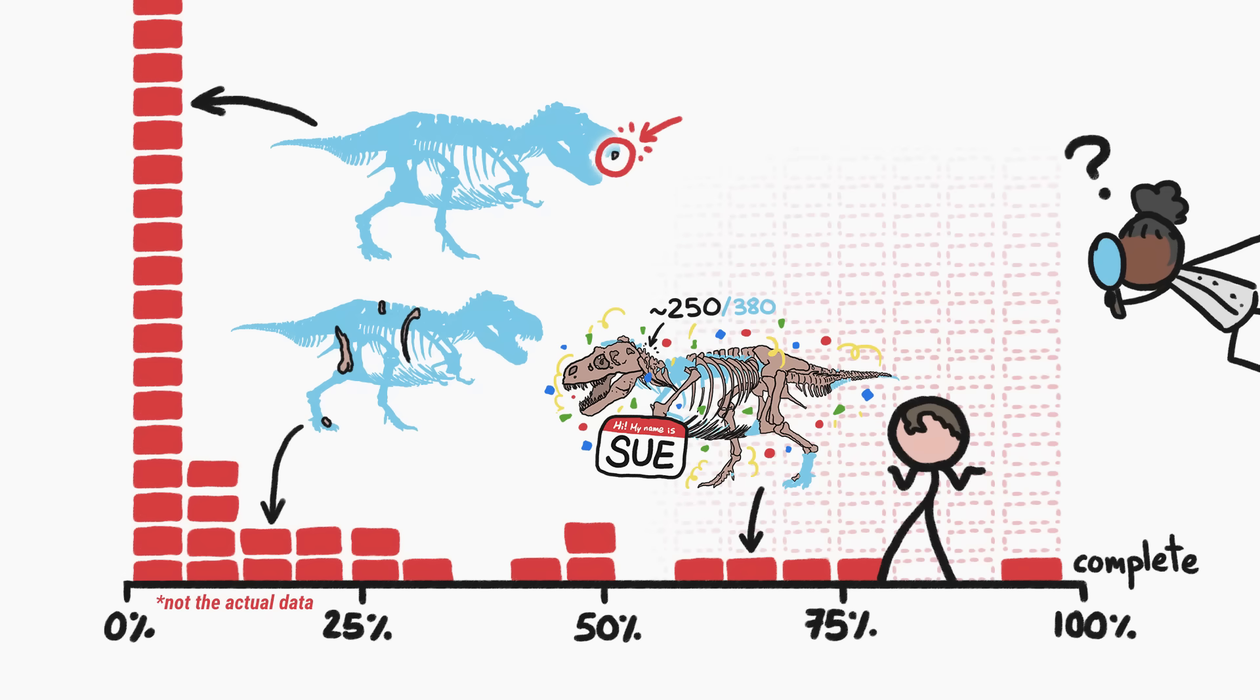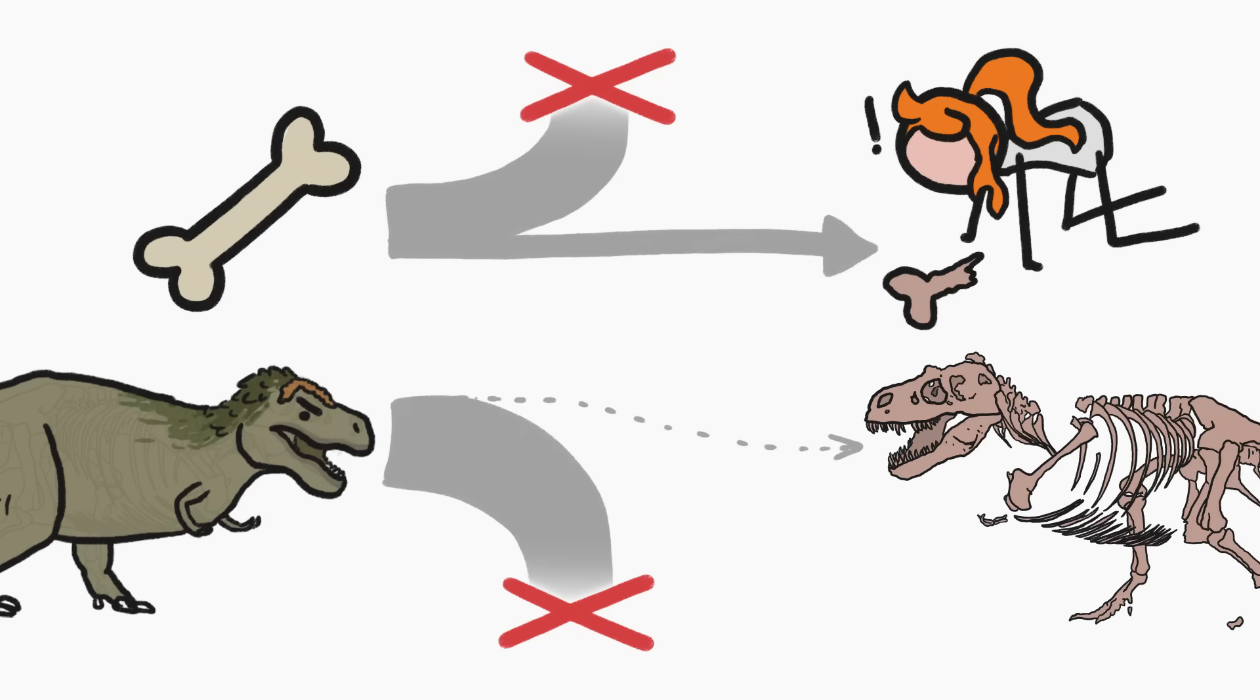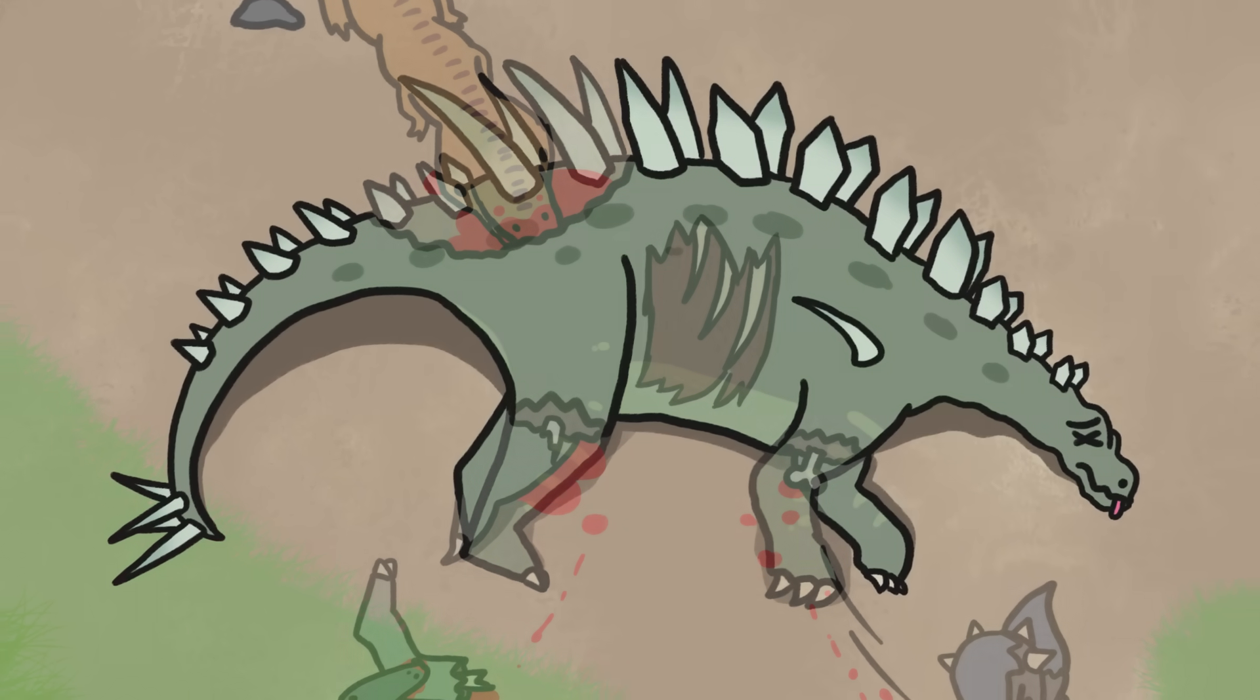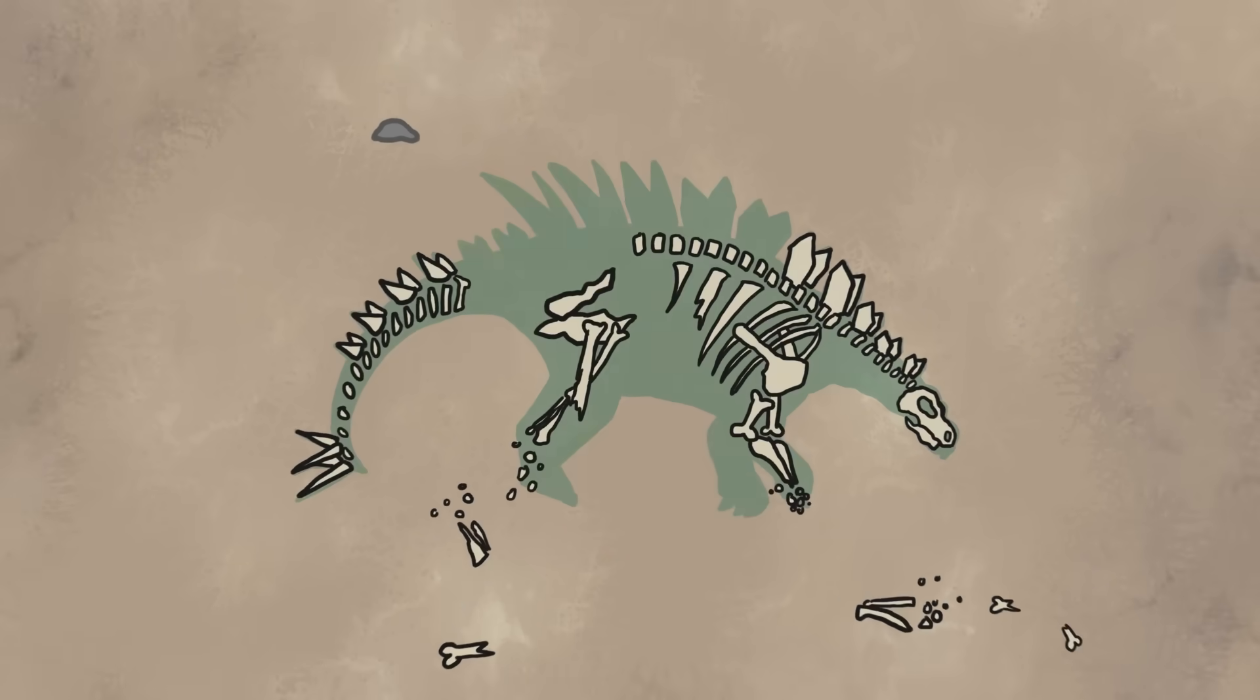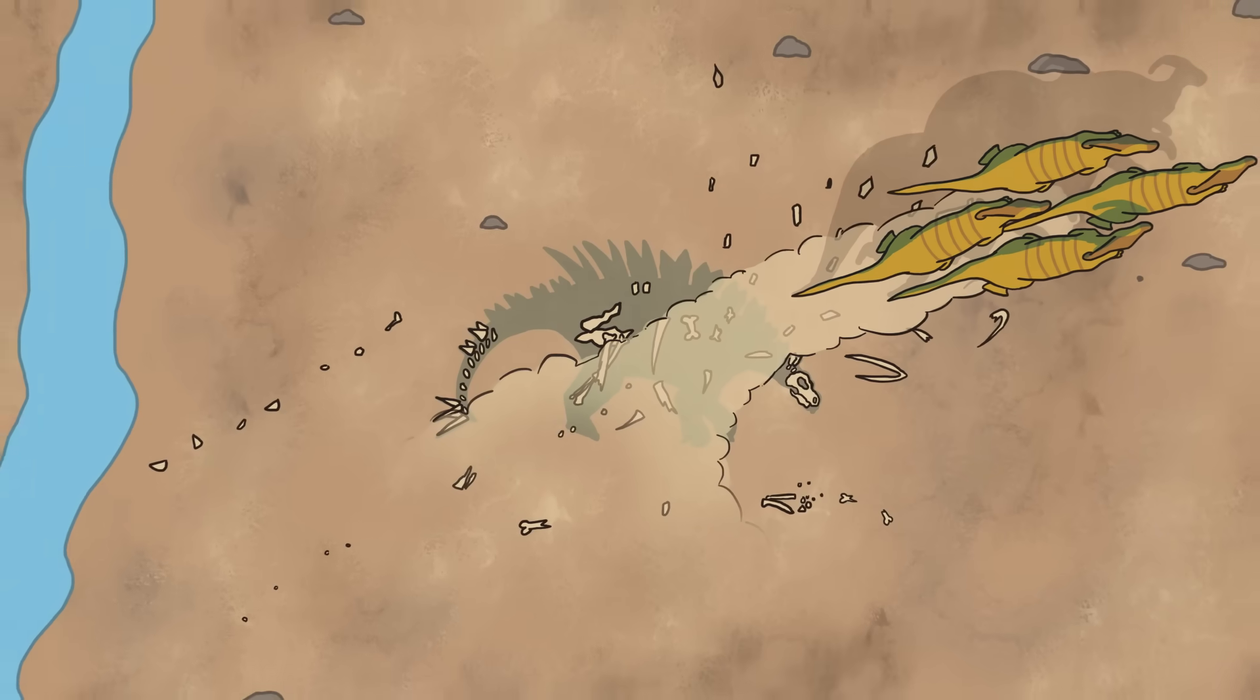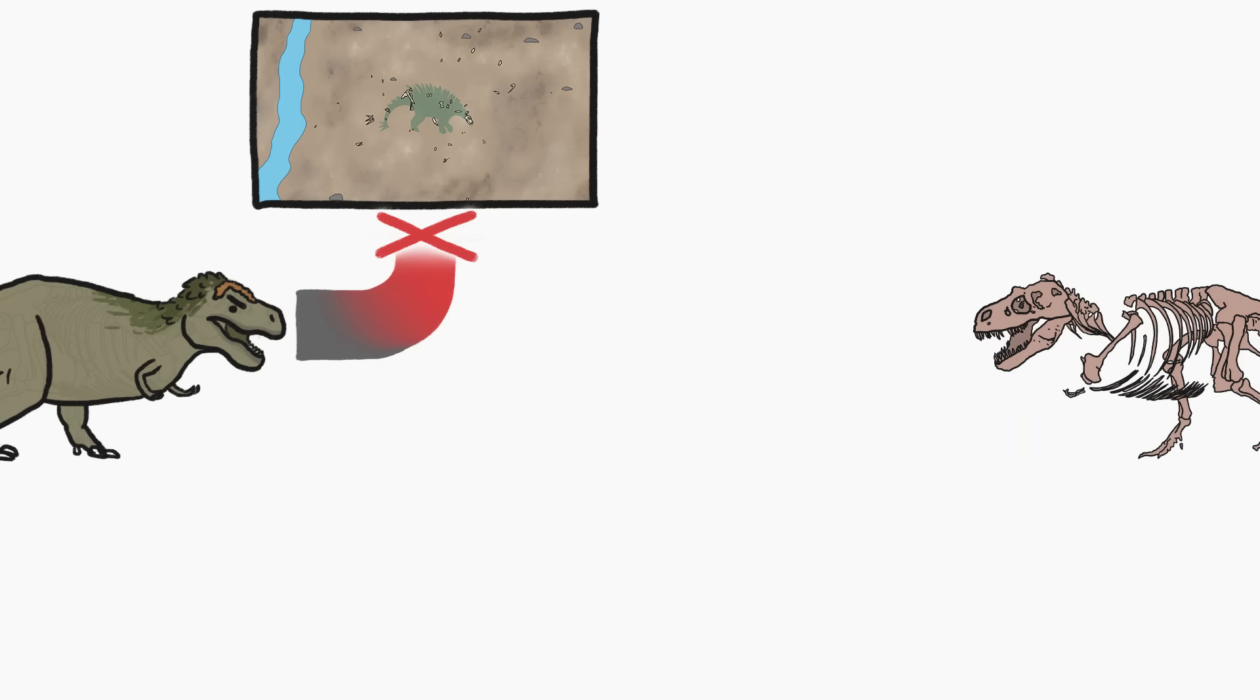We don't tend to find complete specimens because, while becoming a fossil is pretty unlikely in the first place, the fossilization of an entire skeleton is even more unlikely. When prehistoric critters like dinos died, their bodies would get torn apart by predators and scavengers. Their bones would get scattered by flowing water, trampled by herds of animals, and weathered by the sun and wind. So most skeletons got broken up before they even had a chance to fossilize.